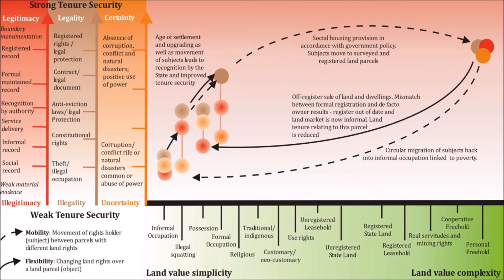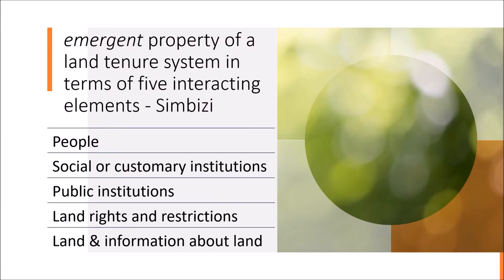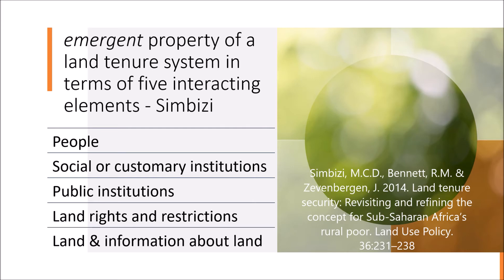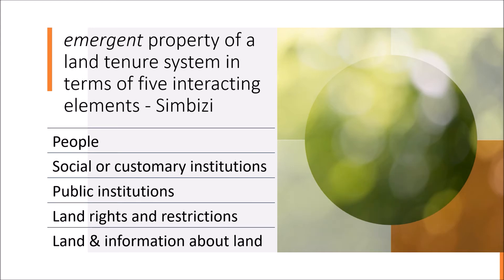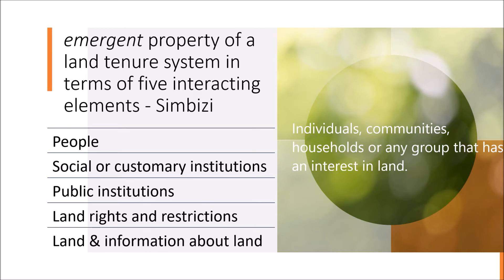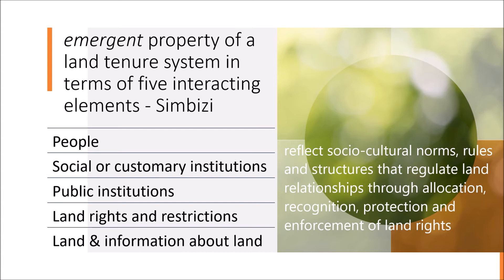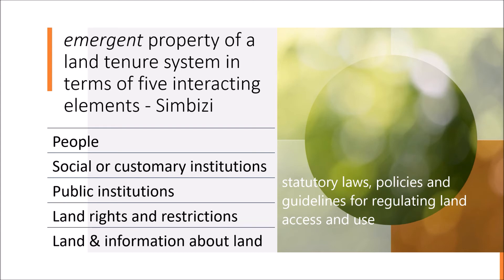In fact, evidence has shown that once people have title, it can decrease security of tenure because it exposes land to the market when held as a means of raising collateral. The model developed by Simbisi identifies land tenure security for the rural poor in sub-Saharan Africa as an emergent property of a land tenure system, in terms of five interacting elements: people, social institutions, public institutions, land rights and restrictions, and land information. People refers to individuals, communities, households, or any group that has an interest in land. The social or customary institutions reflect the social and cultural norms, rules, and structures that regulate land relationships through allocation, recognition, protection, and enforcement of land rights. The public institutions refers to the statutory laws, policies, and guidelines for regulating land access and use, such as in a municipality.